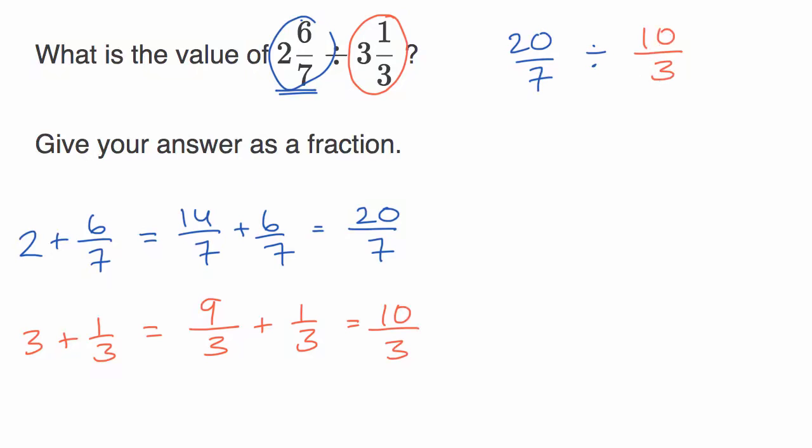So this is going to be equal to 20 divided by seven times the reciprocal of this. The reciprocal of 10 over three is three over 10, and that is going to be equal to...